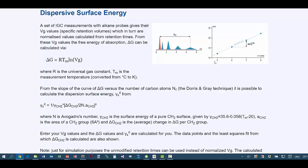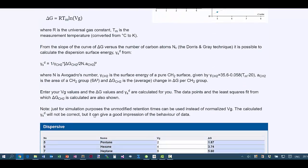And you then plot a graph of the delta G, which you calculate from the Vg of each probe sample. And from the slope you can calculate a gamma SD, which is the dispersion surface energy. You need some factors, Avogadro's number, the surface energy of pure CH2 surface, and also the area of a CH2 group in square angstroms. The app does all the calculations for you.